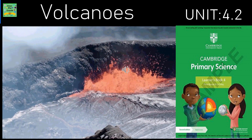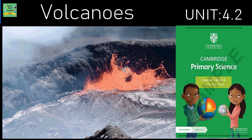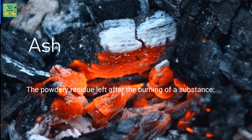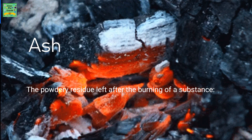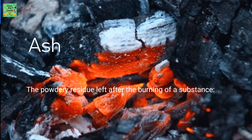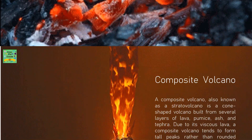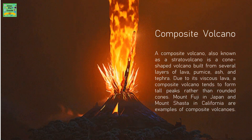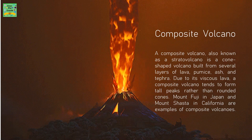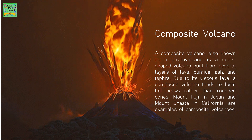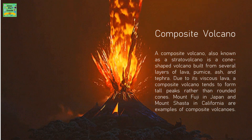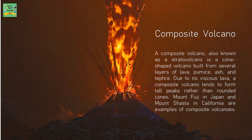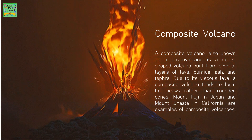Volcanoes, unit 4.2. Ash: the powdery residue left after the burning of a substance. Composite volcano: a composite volcano, also known as a stratovolcano, is a cone-shaped volcano built from several layers of lava, pumice, ash and tephra.